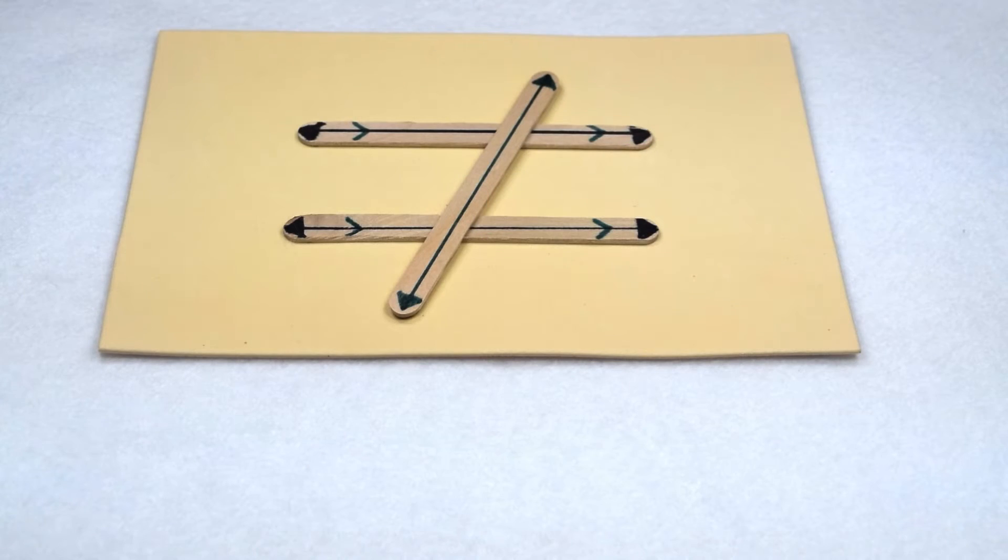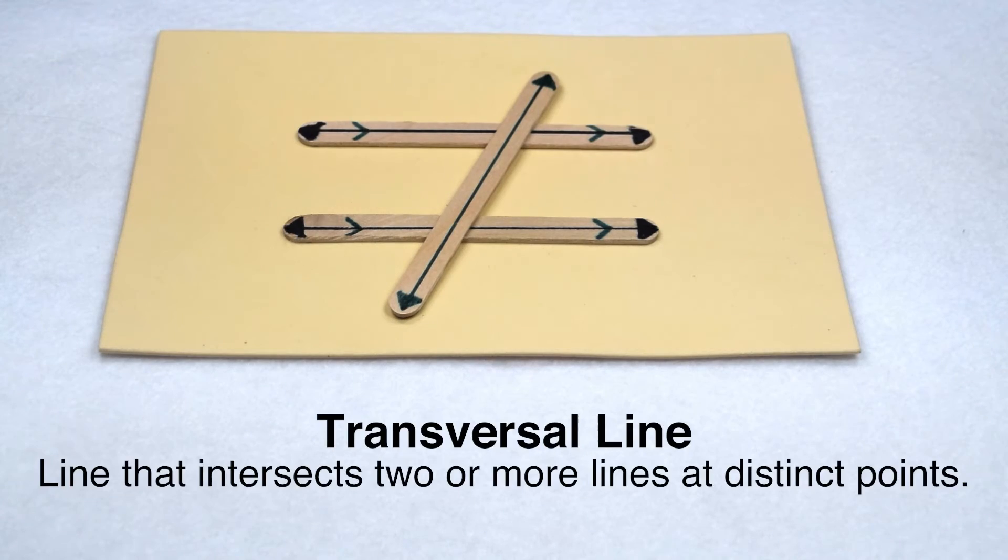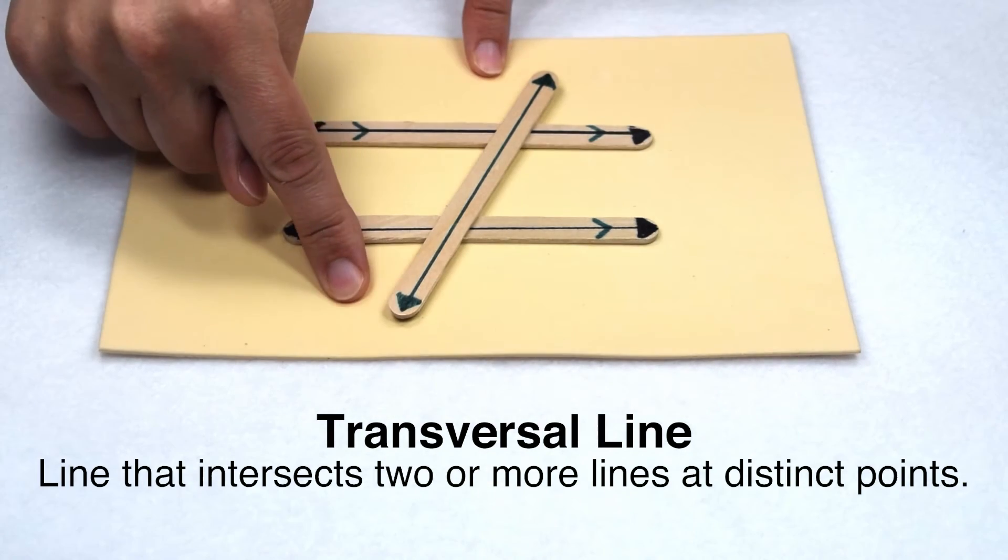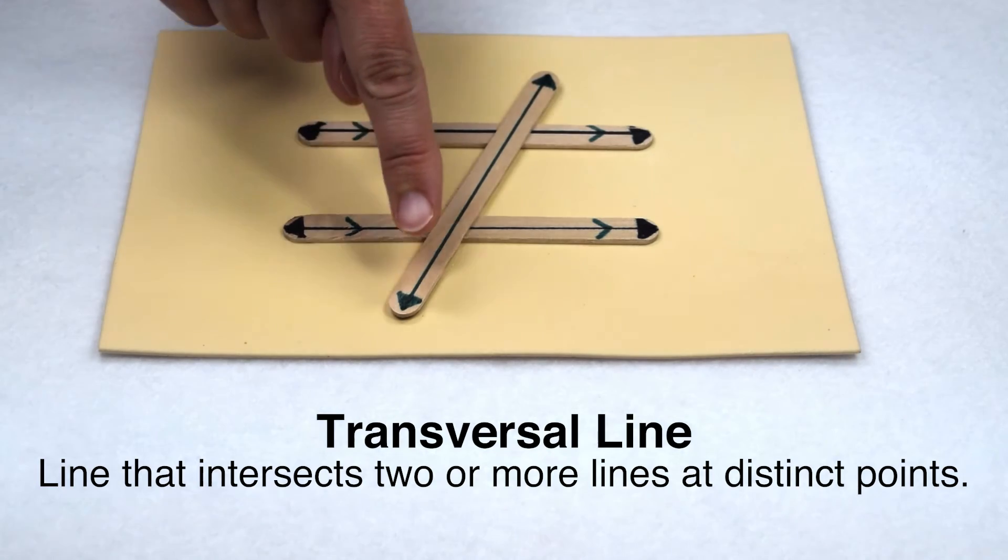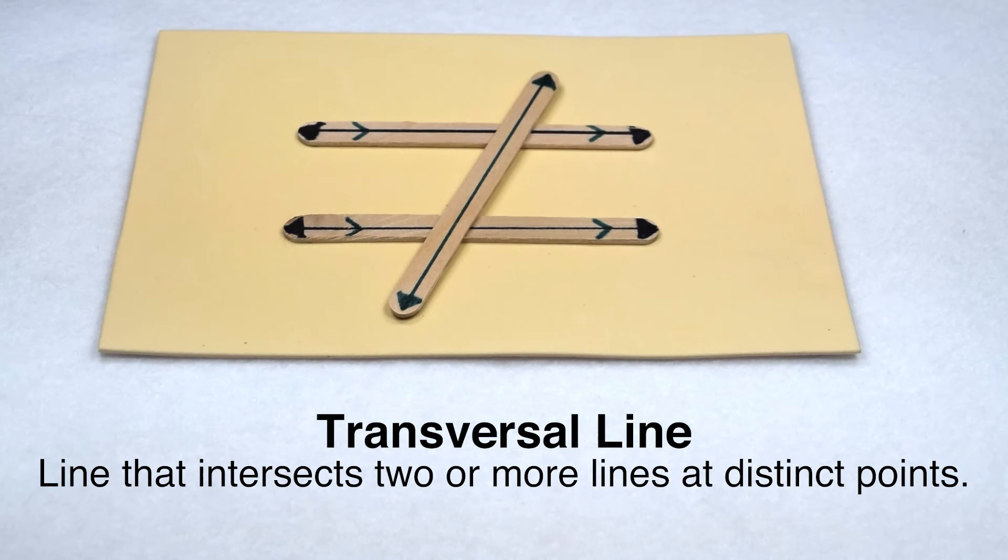What about when more than two lines intersect? One way for that to happen is with a transversal. A transversal is a line that intersects two or more lines at distinct points. It's like it cuts across the line. Here we can see we have two parallel lines cut by a transversal.